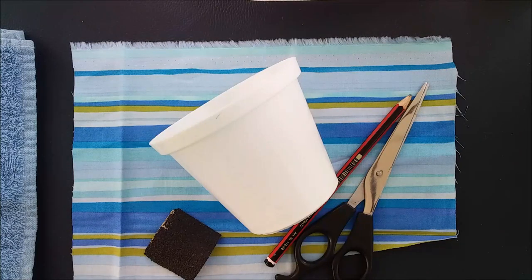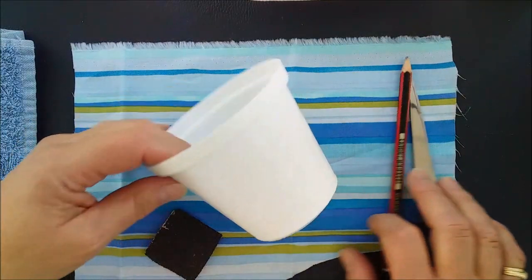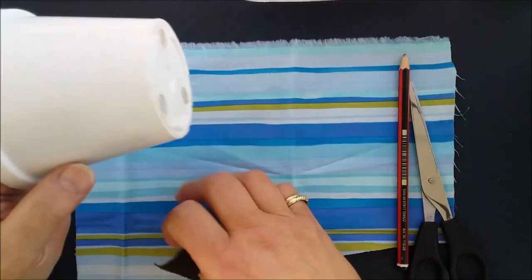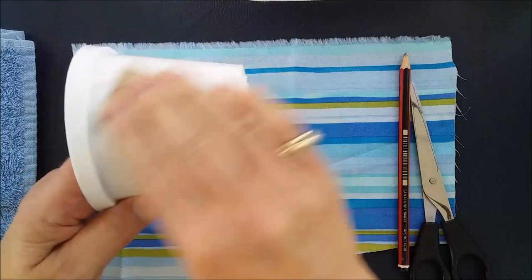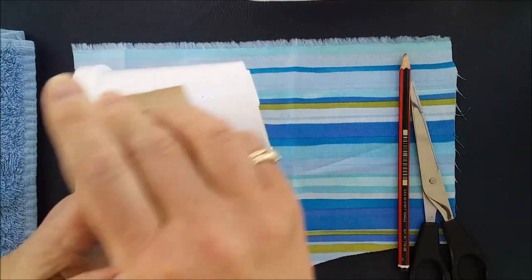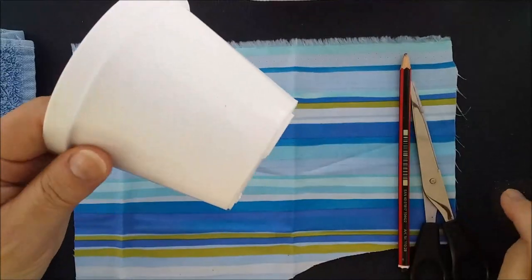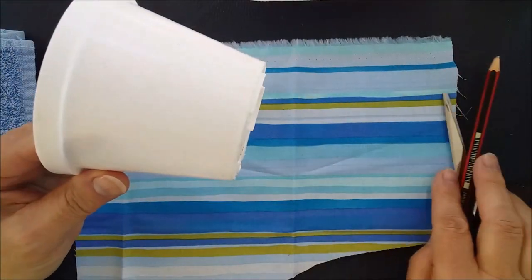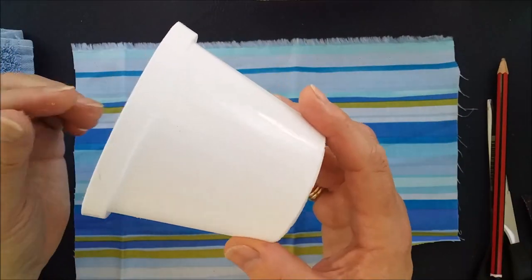So let's get started with our pots. You're going to need a plastic flower pot which you need to wash really well and then just take a piece of sandpaper and lightly sand all the way around the pot. You want to sand it so that the surface is rough and when we come to glue the fabric down it's going to stick nicely.